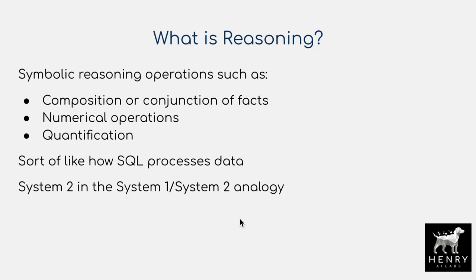What is reasoning and how does it differ from other kinds of skills that require intelligence? A great analogy is the idea of System 1 and System 2 thinking, where System 1 describes intuitive perception — the quick knowledge you don't even have to think about, like instantly recognizing an object. System 2 is this slow, logical style of thinking. Reasoning refers to System 2 skills: symbolic reasoning operations like compositions or conjunctions of facts, numerical operations and quantification — similar to how SQL processes data with relational algebra. This kind of symbolic reasoning is what we're trying to embed into language modeling systems that excel at System 1 tasks but struggle with System 2 reasoning.